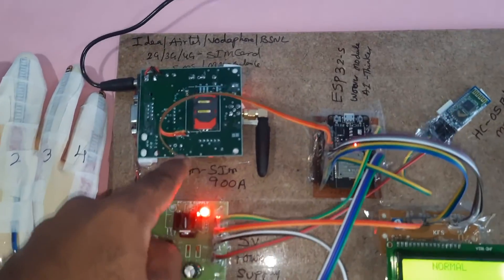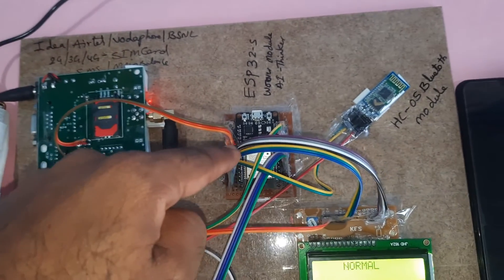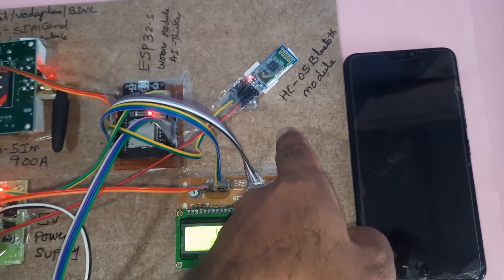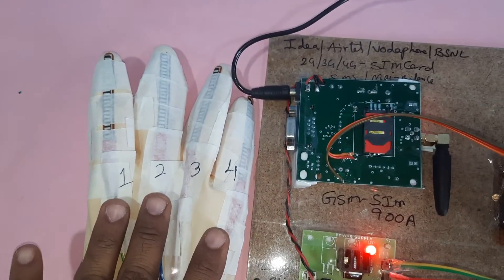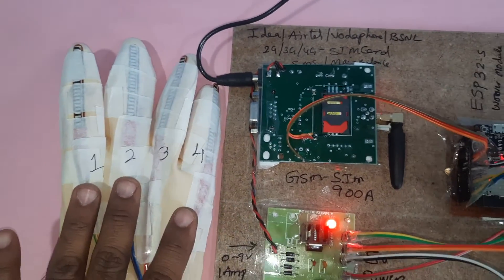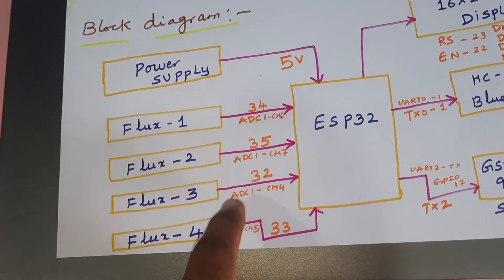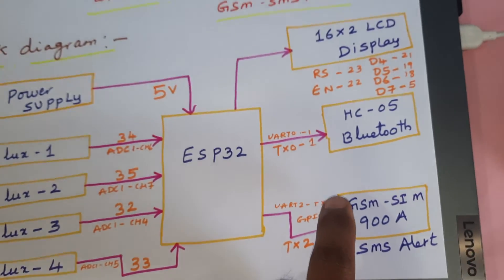Power supply board, GSM SIM900A, ESP32 module, 16x2 LCD display, HC-05 Bluetooth module, level conversion circuit, and four 2.2-inch flex sensors connected to GPIO pins 34, 35, 32, and 33. Thank you.